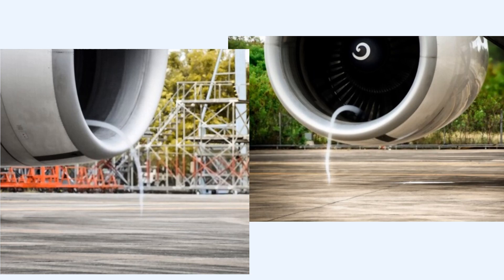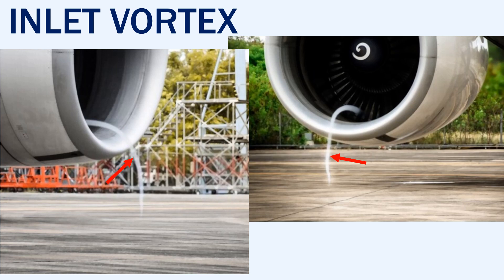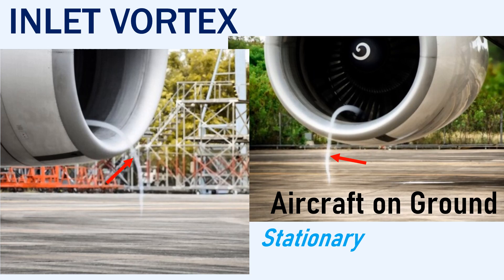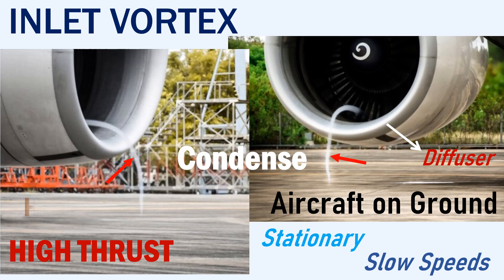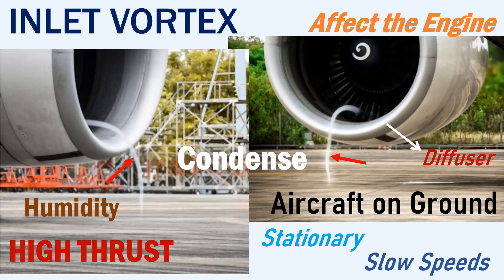Now we will look at the smoke trails created at the engine inlet. These trails are called inlet vortices and occur when the aircraft is on the ground, stationary or moving at slow speeds, while the engine is creating high thrust. These vortices extend from the ground and enter the engine through the engine's diffuser section. The vortex that forms will condense the air, creating a visible vortex trail at the inlet as shown here. These vortices also depend on the humidity of the outside air.